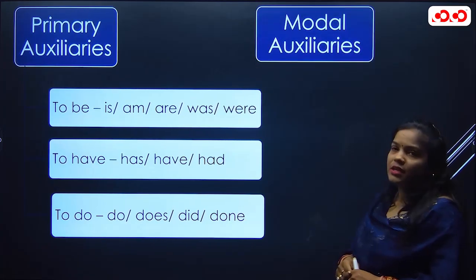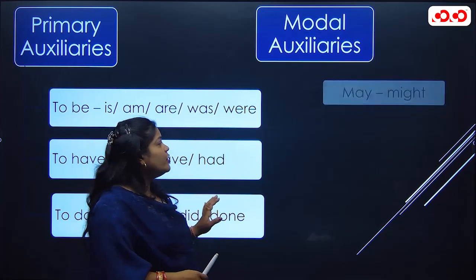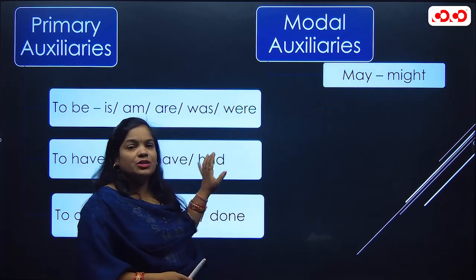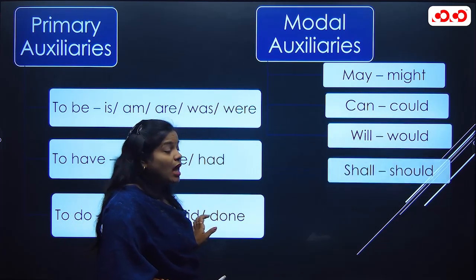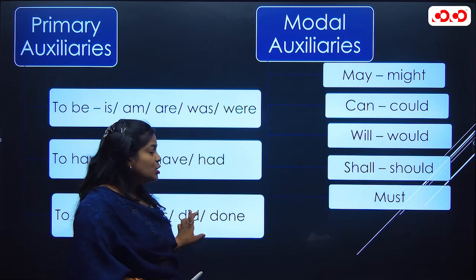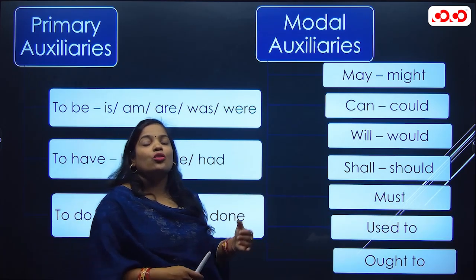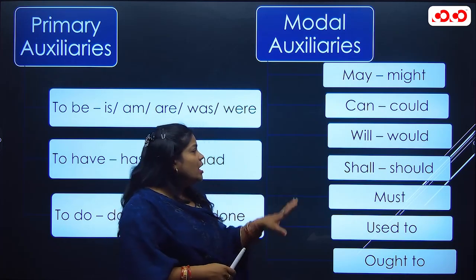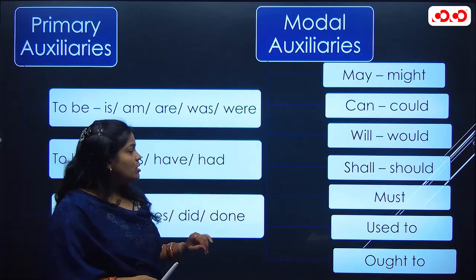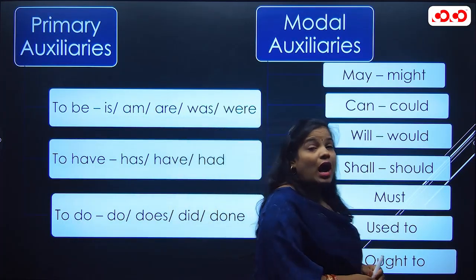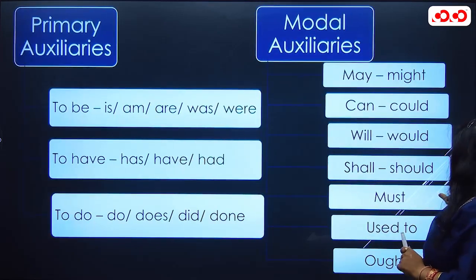Next are modal auxiliary verbs: may, might, can, could, will, would, shall, should, must, used to, and ought to — these are all modal auxiliary verbs. We will see the usage of each — who to use where and how — in the next slide.